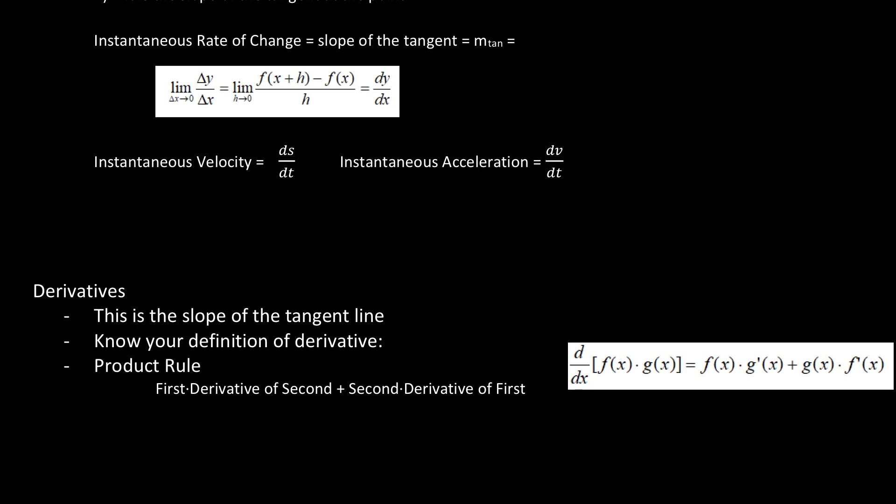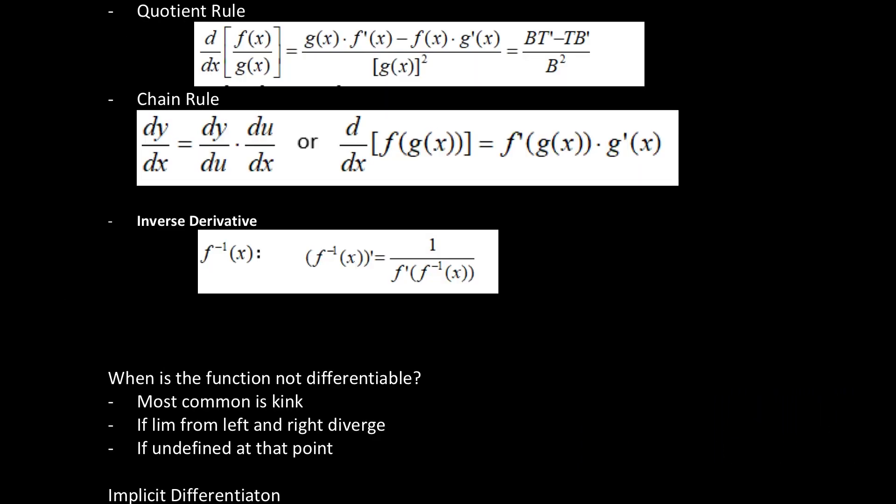As far as derivatives are concerned, this is the slope of the tangent line, so you need to know your definition of derivative. Here's the first thing we're going to talk about, which is the product rule. Product rule is the first times the derivative of the second plus the second times the derivative of the first. You can see it as f(x) times g'(x) plus g(x) times f'(x). And now it leads us to the quotient rule, which is derivative with respect to x of f(x) over g(x). We can write it out in formula format like this, which is the bottom times the derivative of the top minus the top times the derivative of the bottom over the bottom squared.